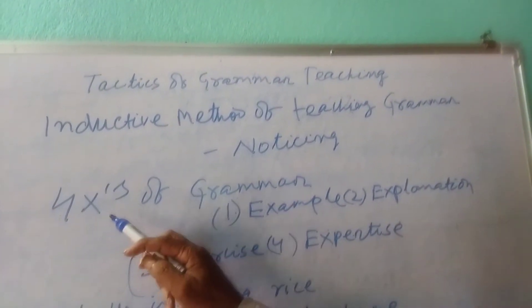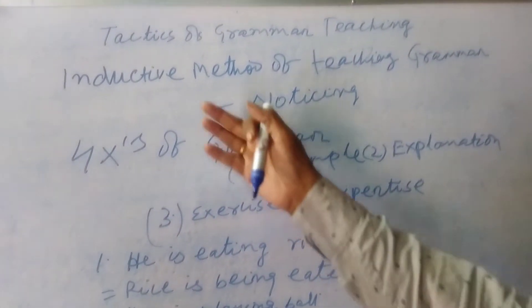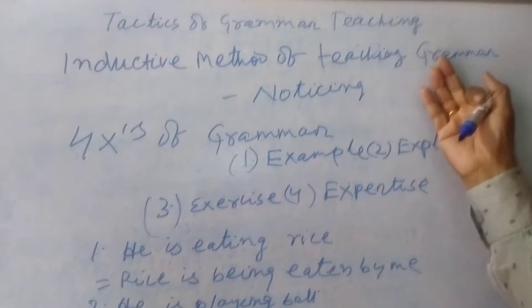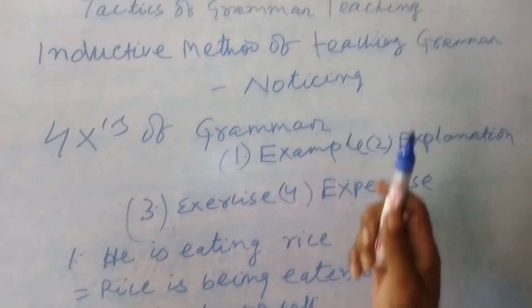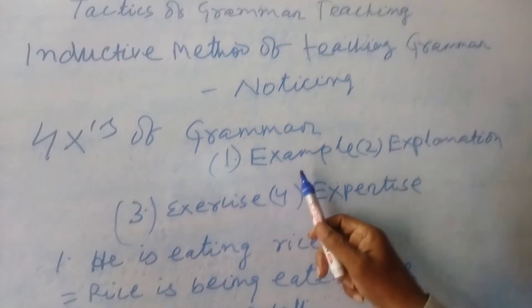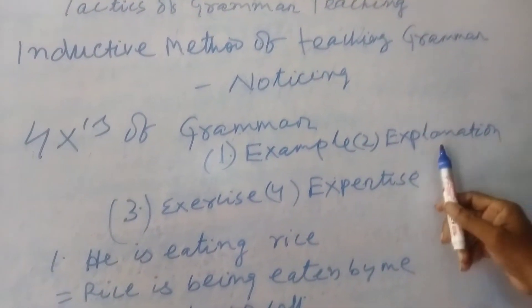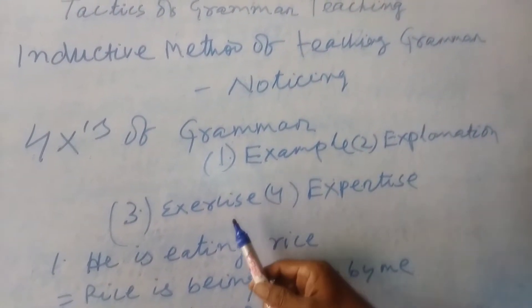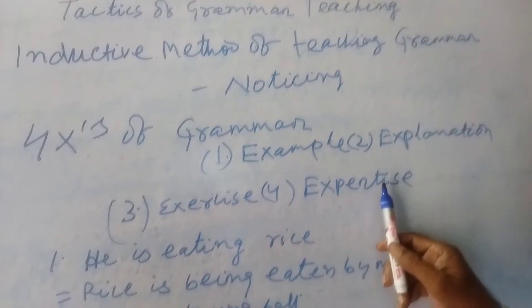There are four X's of grammar as far as the inductive method of teaching grammar is concerned. Number one is example, number two is explanation, number three is exercise, and number four is expertise.